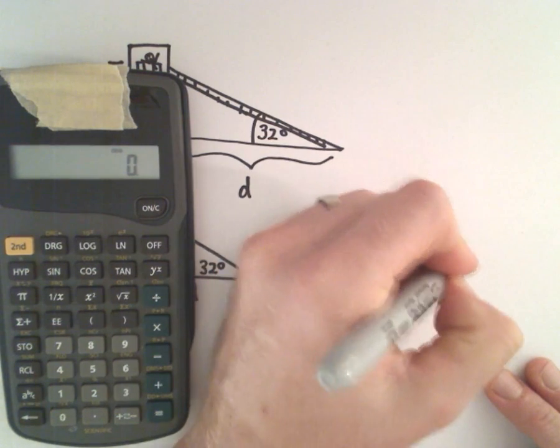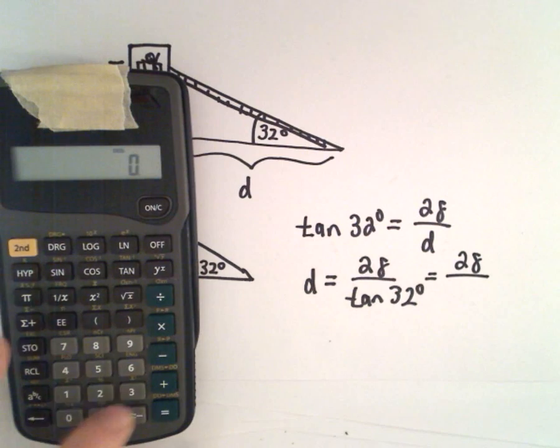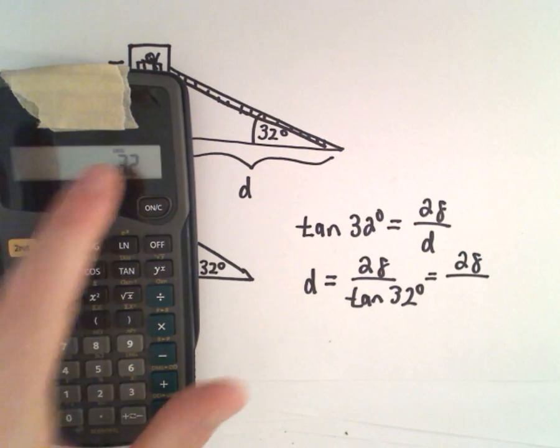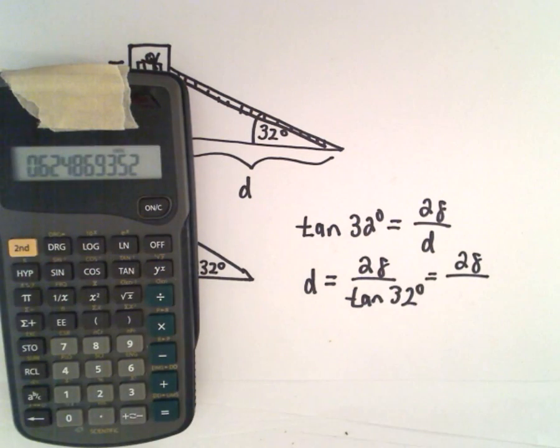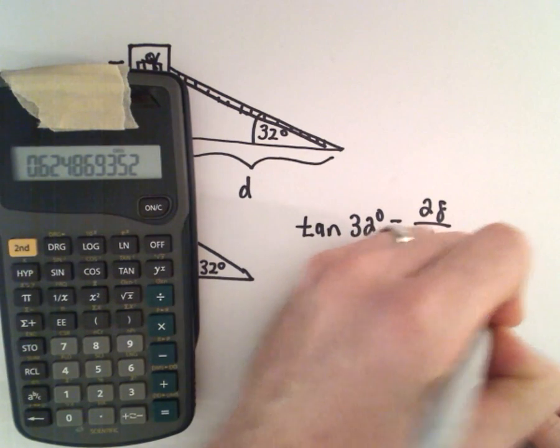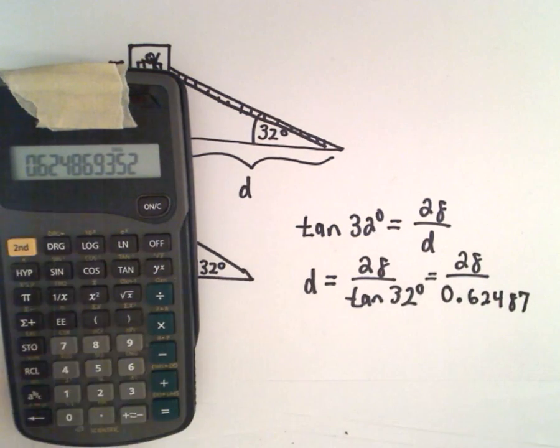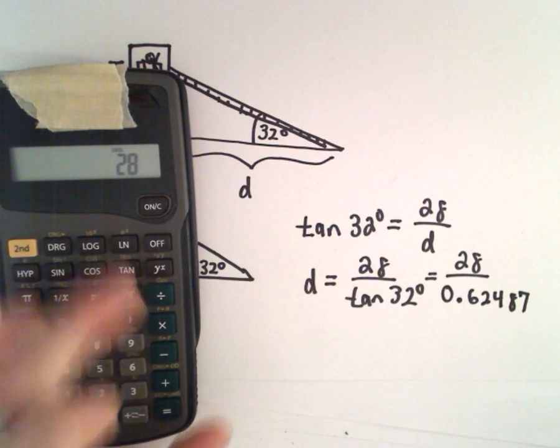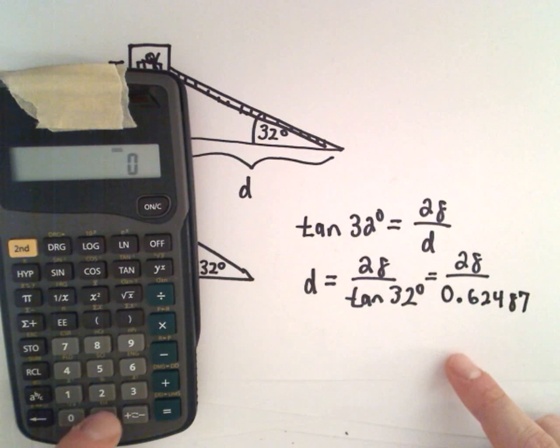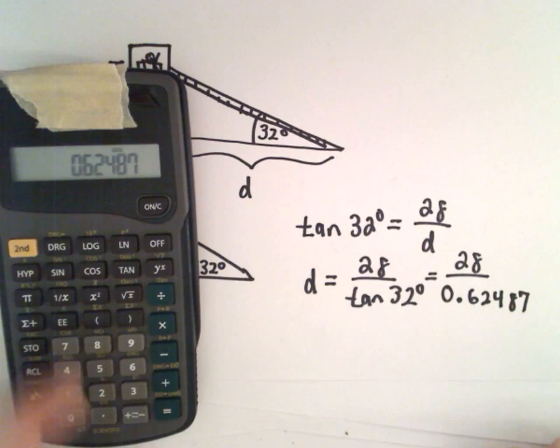So let's figure out what tangent of 32 degrees is. So there's 32, it's in degree mode, tangent. I'm getting that to be 0.6248. I'm going to round to 7. So if we take 28 and divide by 0.62487,